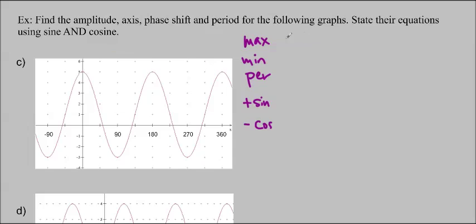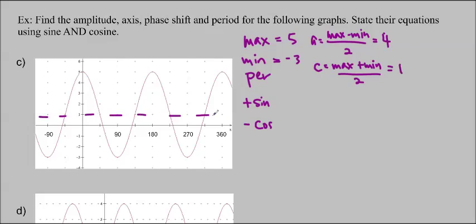Okay, so hopefully you found that the maximum was 5, and the minimum was negative 3. This one's a little bit more tricky because they're not equidistant from the middle, so we'll do the amplitude is equal to max minus min divided by 2, which is 5 plus 3 divided by 2 is 4, and the c is max plus min divided by 2, so 5 minus 3 divided by 2 gives us 1. So we think that the axis is right here at y equals 1, and we should be 4 apart on either side, which we are.